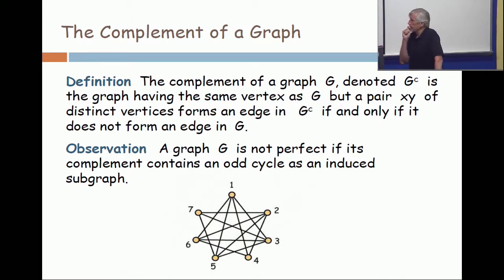It's just the drawing, but four and seven aren't connected either. Have I told you how much I dislike you? All right. So, when it shows up in the notes, four and seven will be connected. They're supposed to... This is supposed to be the complement of a seven cycle. So, all the non-edges in the seven cycle turn into edges. Thank you for pointing that out.